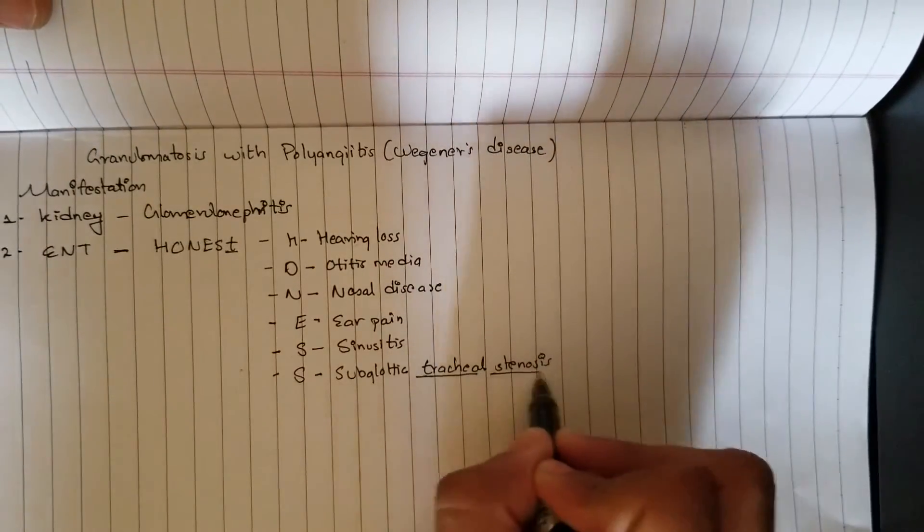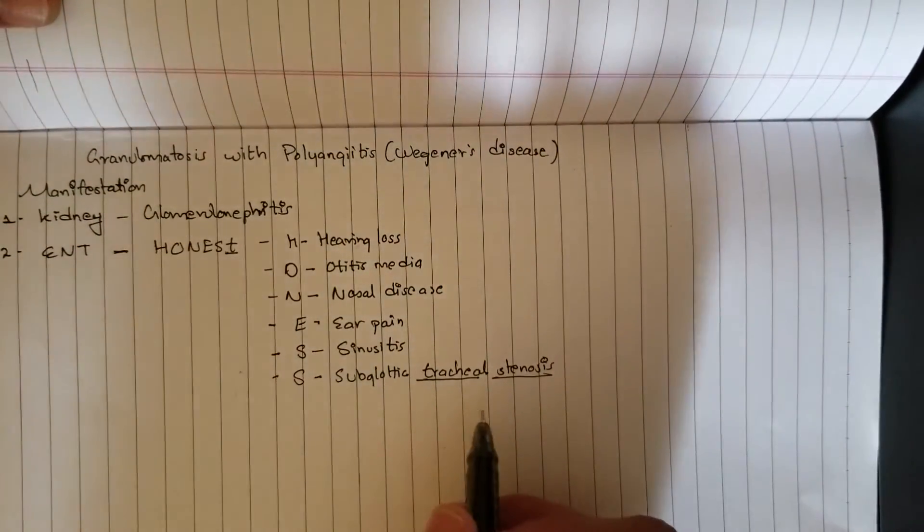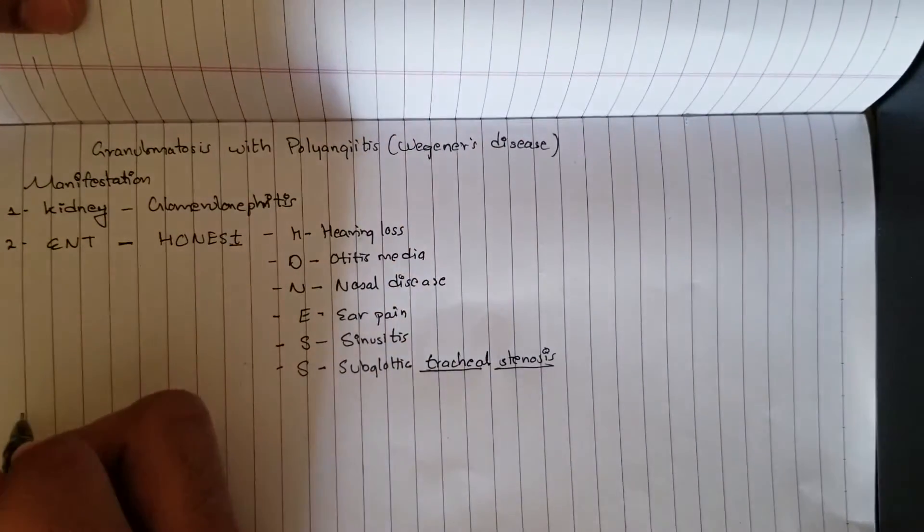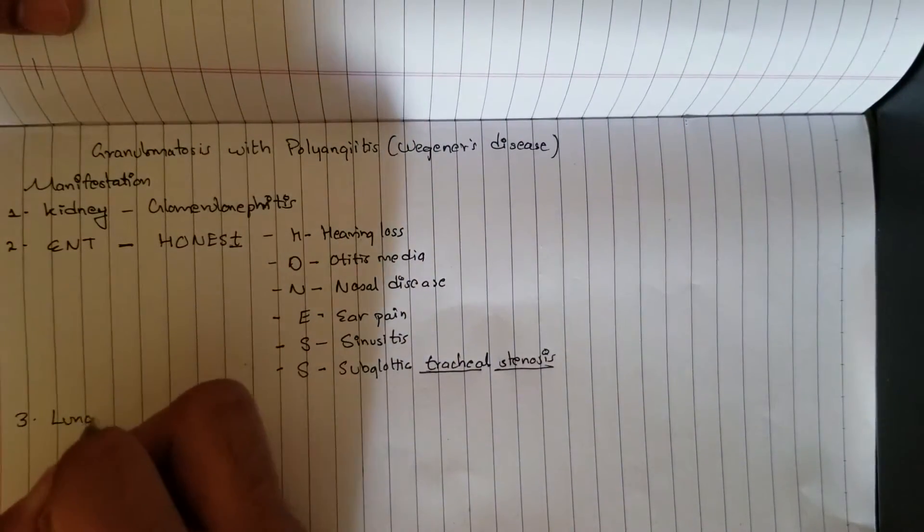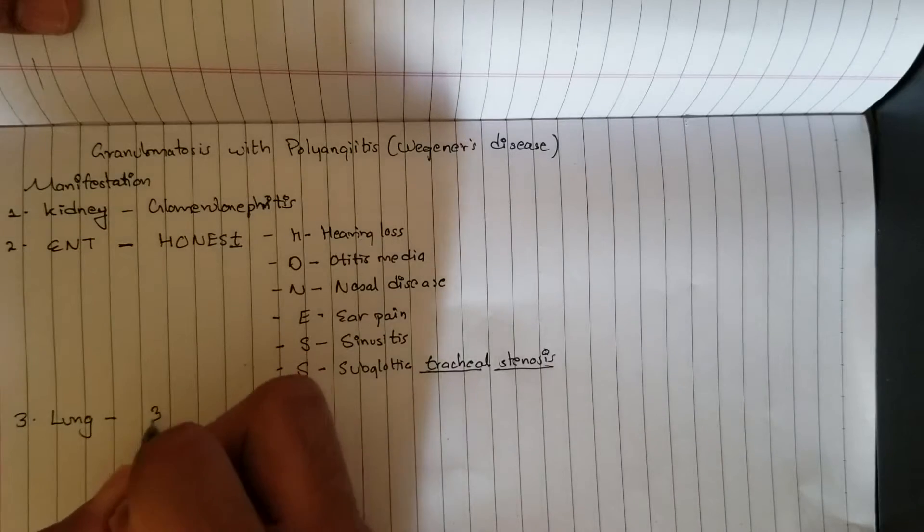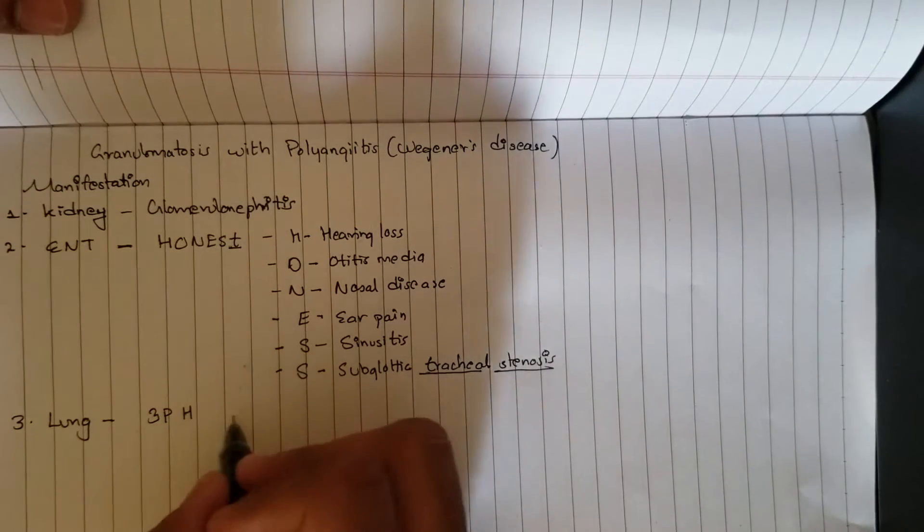E for ear pain, S for sinusitis, and another S for subglottic tracheal stenosis. So this small T refers to tracheal stenosis. Next one is in the lung.